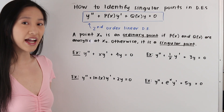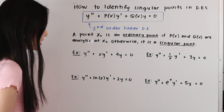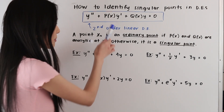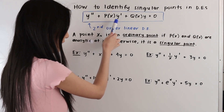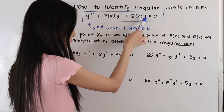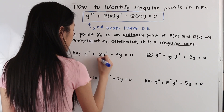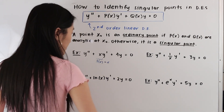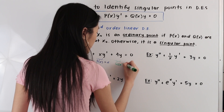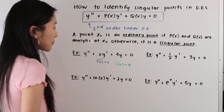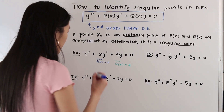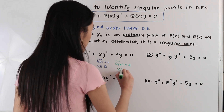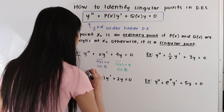Let's take a look at some examples and identify whether we have any singular points. In this first example, we have y double prime plus x y prime plus 4y is equal to zero. Here p of x is the function multiplying y prime, and q of x is the function multiplying y. So p of x is equal to x and q of x is equal to 4. Both p of x and q of x are defined for all real numbers, so we have no singular points.